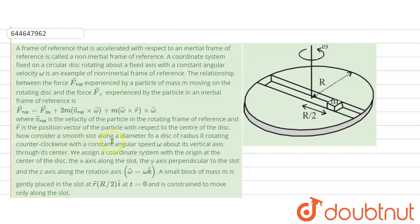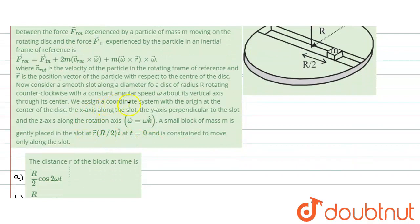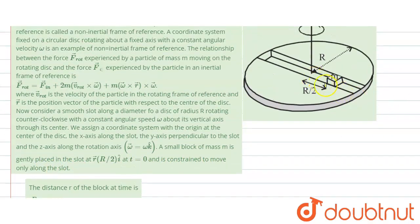Now consider a smooth slot along a diameter of a disc of radius R, rotating counterclockwise with constant angular velocity ω about a vertical axis through its center. We assign a coordinate system with the origin at the center of the disc, the x-axis along the slot, y-axis perpendicular to the slot, and z-axis along the rotation direction (k-direction). A small block of mass m is placed gently at radial location R/2 at t = 0 and is constrained to move only along the slot.